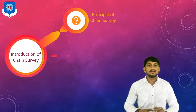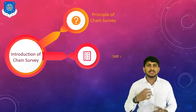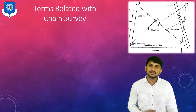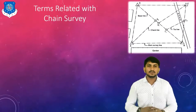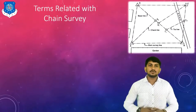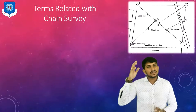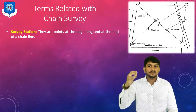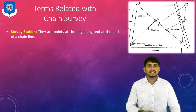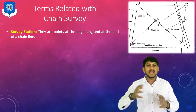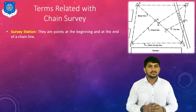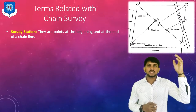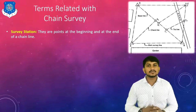The second topic covers terms related to chain survey. Suppose there is a plot having boundary stations A, B, C, and D. The first term is survey stations — these are the stations at the beginning and at the end of the chain line. Here A, B, C, D as well as S1, S2, T1, and T2 are the survey stations.